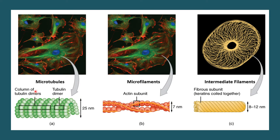The main components of the cytoskeleton are the microtubules, microfilaments, and the intermediate filaments. The microtubules are formed of various tubulin subunits — you can see these round green structures, which are all tubulin subunits that combine to form a microtubule. In the case of microfilaments, that is the actin microfilament, various subunits of actin combine to form the microfilament.